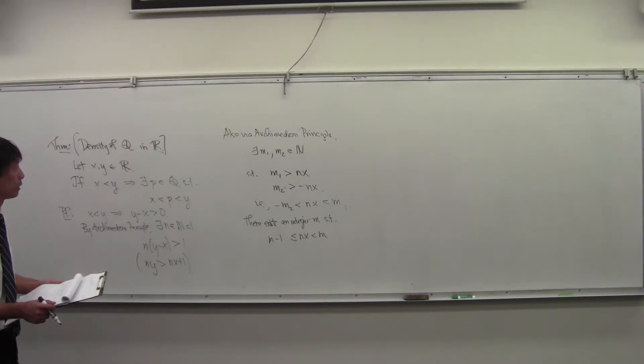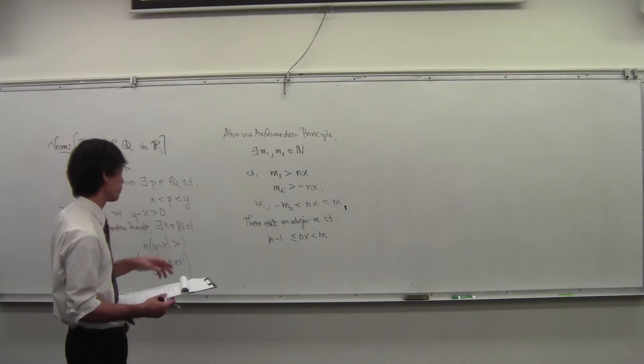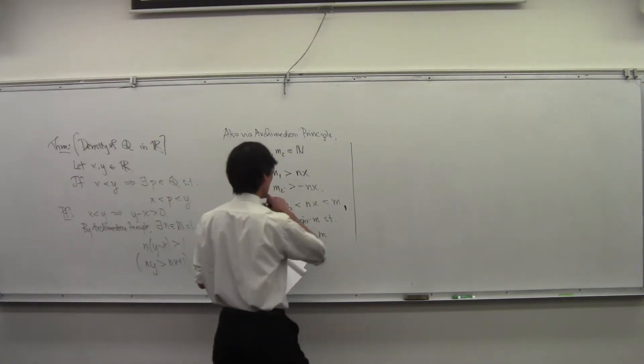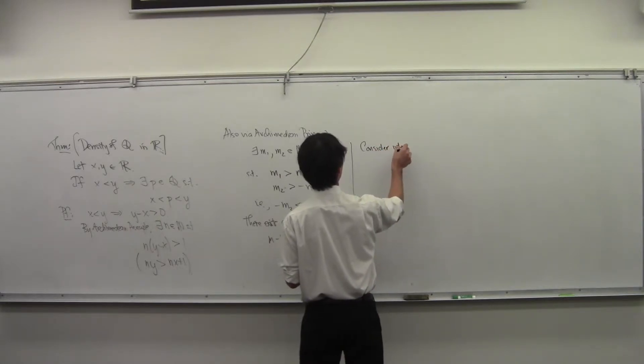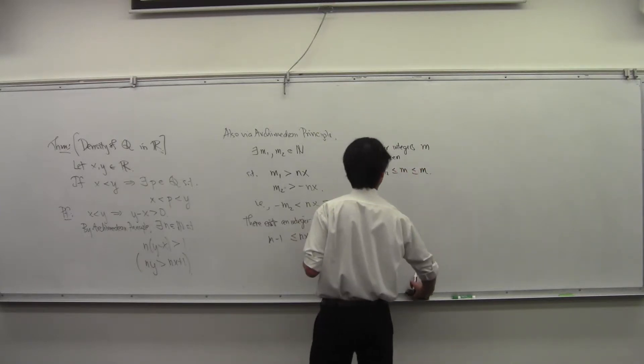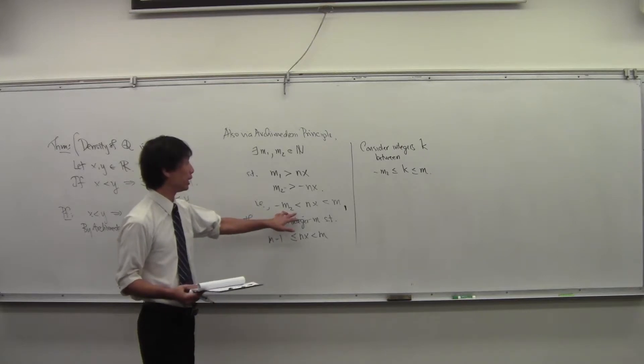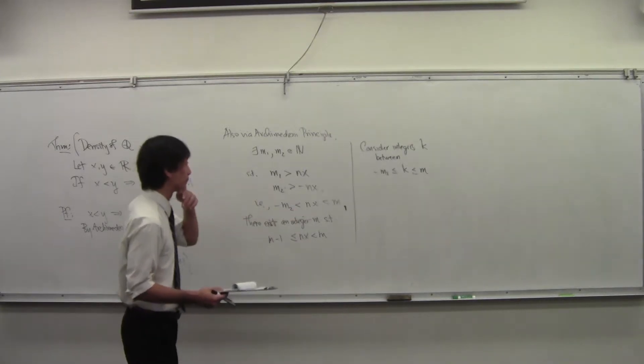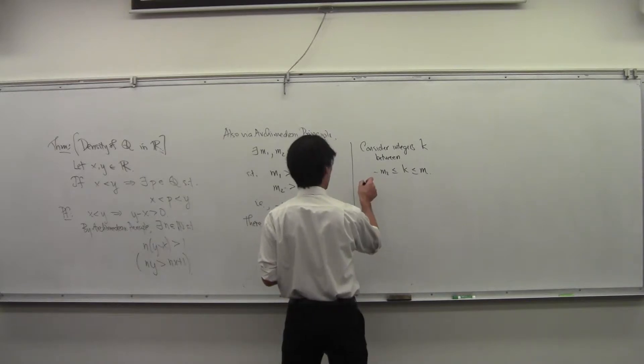So now, how do you go from that to this? I think the way to do it is like this: consider integers K between negative M2 and M1. And choose the smallest one.